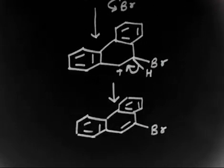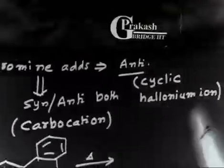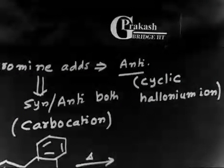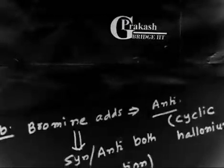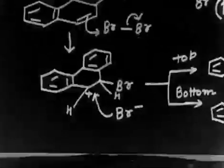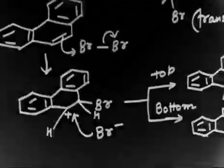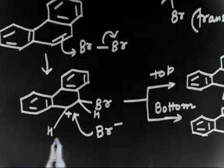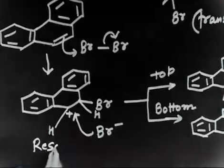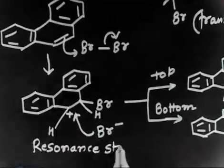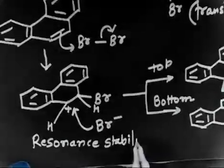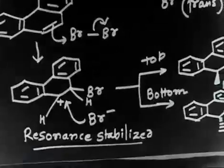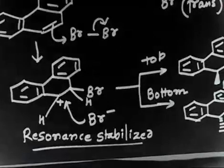One important point in this question is: why is a cyclic halonium ion not formed here, but instead a carbocation is formed? We said generally bromine forms a cyclic halonium ion. In this reaction a carbocation is formed because the carbocation intermediate is resonance-stabilized through this ring as well as the adjacent ring — and that is why the carbocation is preferred over the cyclic halonium ion.